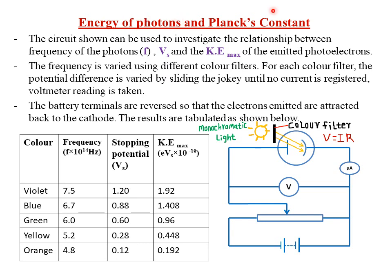Today we are looking at the energy of photons and Planck's constant. The circuit shown can be used to investigate the relationship between the frequency of the photons f, the stopping potential Vs, and the maximum kinetic energy KE max of the emitted photoelectrons. This is our circuit here.